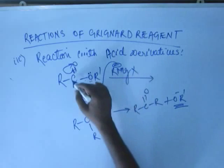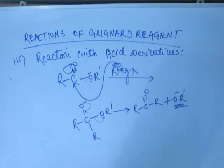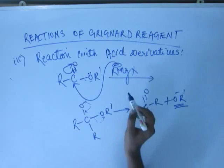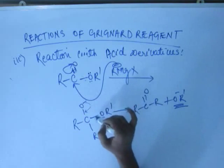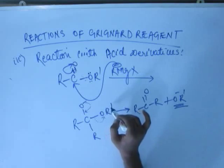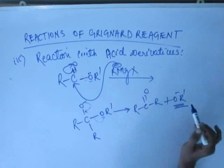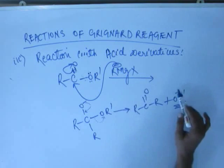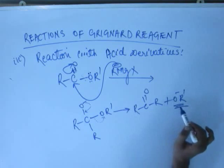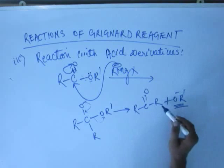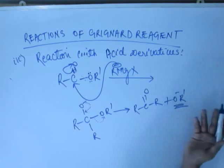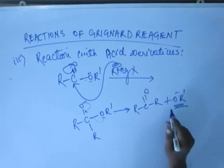You had the same nucleophilic attack as in acyl chloride. In acyl chloride, you had removal of Cl minus (chloride ion); in the case of ester, you will have removal of an alkoxide ion. In acyl chloride, you had regeneration of a ketone; in ester, you also have generation of a ketone.